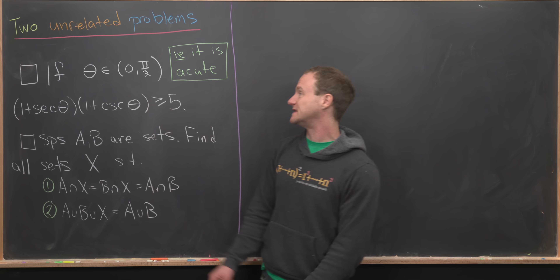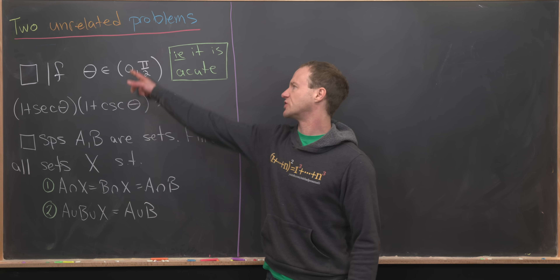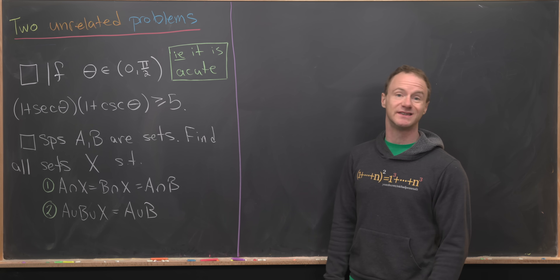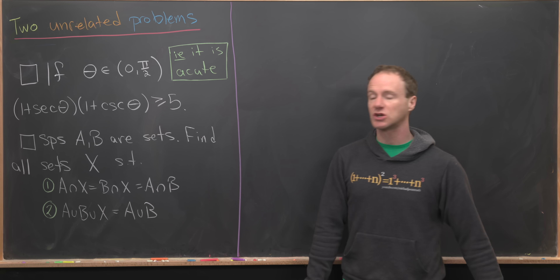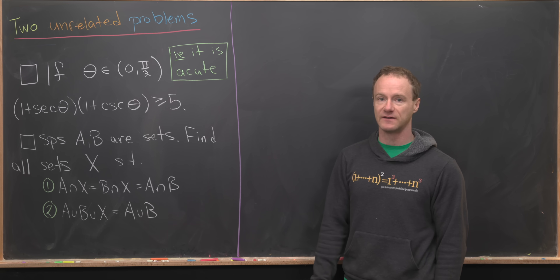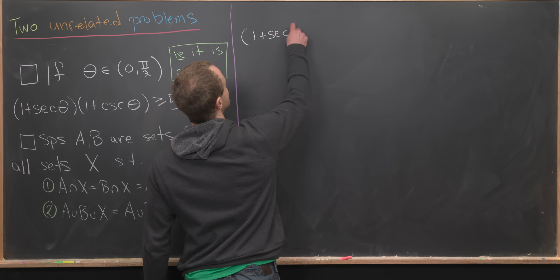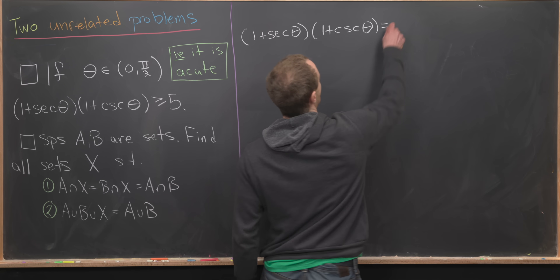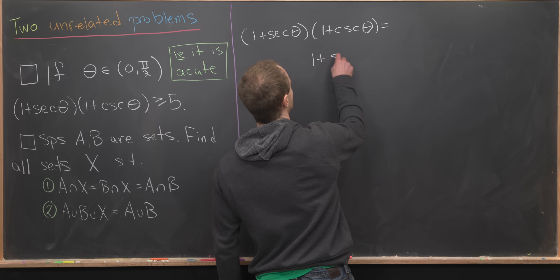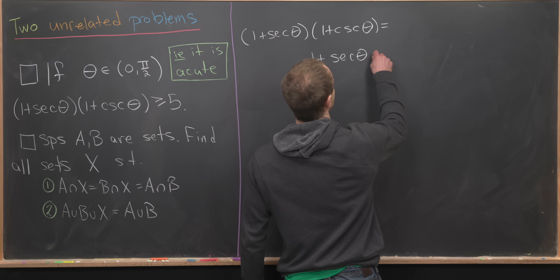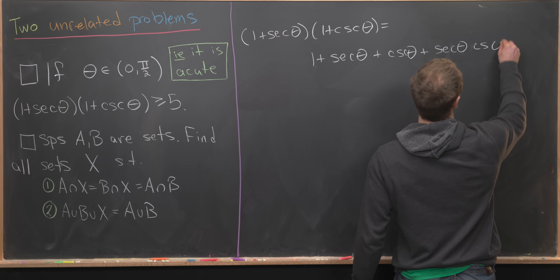For Problem 1: if theta is between zero and pi over two — an acute angle, zero to 90 degrees, not including the endpoints — then (1 + sec θ)(1 + csc θ) ≥ 5. We start by expanding those two binomials, giving us 1 + sec θ + csc θ + sec θ · csc θ.